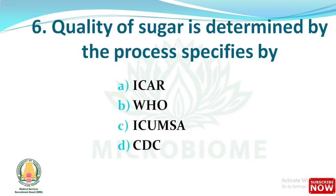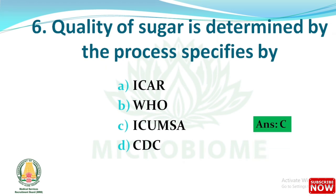Next question: quality of sugar is determined by the process specified by which organization? The options are ICR, World Health Organization, ICUMSA, and CDC. The right answer is option C: ICUMSA.